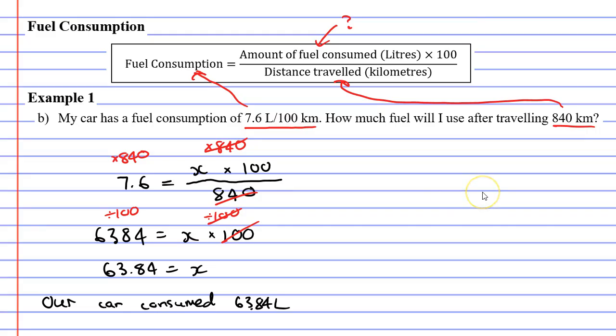Alright, so let's now do this using the four boxes technique. And we're going to put on one side the litres used, and on the other side the kilometres travelled. So using the fuel consumption which was 7.6 litres per 100 kilometres, we'll put that down there. And we want to see how much fuel we use after travelling 840 kilometres. So we'll put that in the kilometres column.